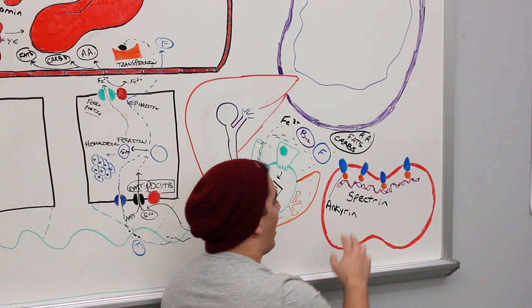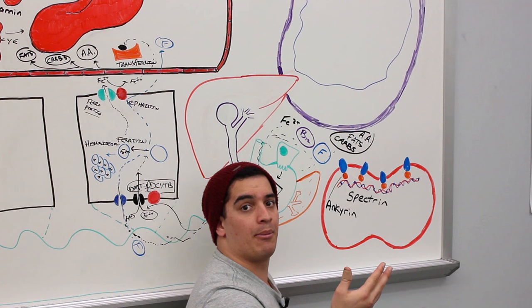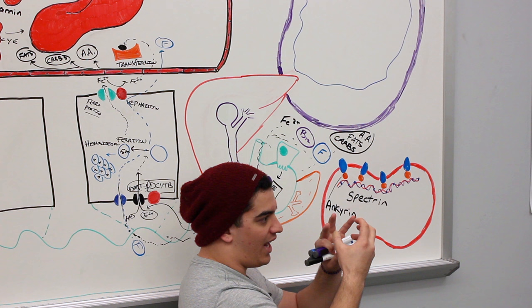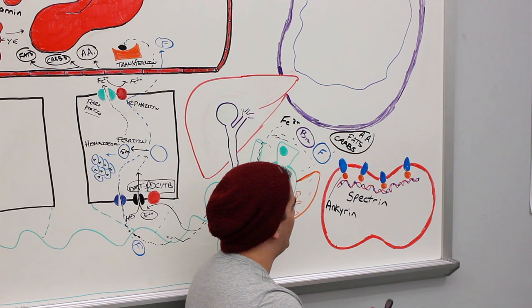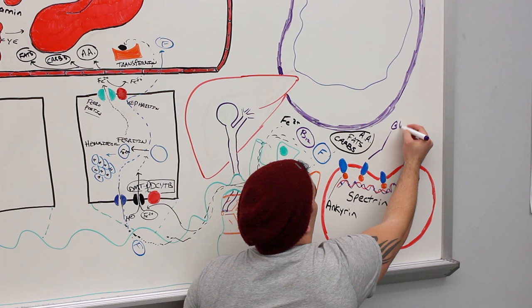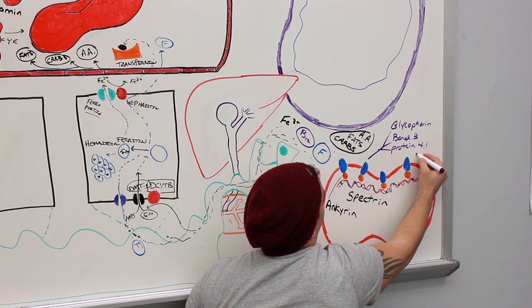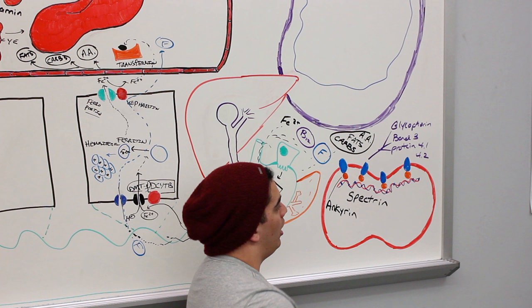These proteins are important because red blood cells, only about 7 to 7.5 micrometers in diameter and about 2.5 micrometers in thickness, have to squeeze through capillaries that are sometimes smaller than they are. They have to be able to bend, flex, and be very pliable. Spectrin and anchoring are what allow for that process. Other proteins — glycophorin, band 3, protein 4.1, and 4.2 — are good to know, but spectrin and anchoring are the main ones.